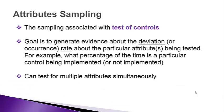Attribute sampling is the sampling associated with testing controls. When we're testing controls, we take a sample of items and determine whether or not there are any deviations or exceptions. For example, we might look at cancelled checks — any check with an amount greater than $10,000 requires dual signatures. If we look at 10 checks and find one check with only one signature, that one check would be considered a deviation.